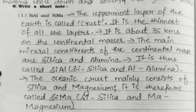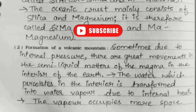Now Question 8 — Write a short note. First: SIAL and SIMA. The uppermost layer of the earth is called crust; it is the thinnest of all the layers, about 35 kilometres thick over continental masses. The main mineral constituents are silica and alumina, so it is called SIAL — SI for silica and AL for alumina. The oceanic crust mainly consists of silica and magnesium, so it is called SIMA — SI for silica and MA for magnesium.